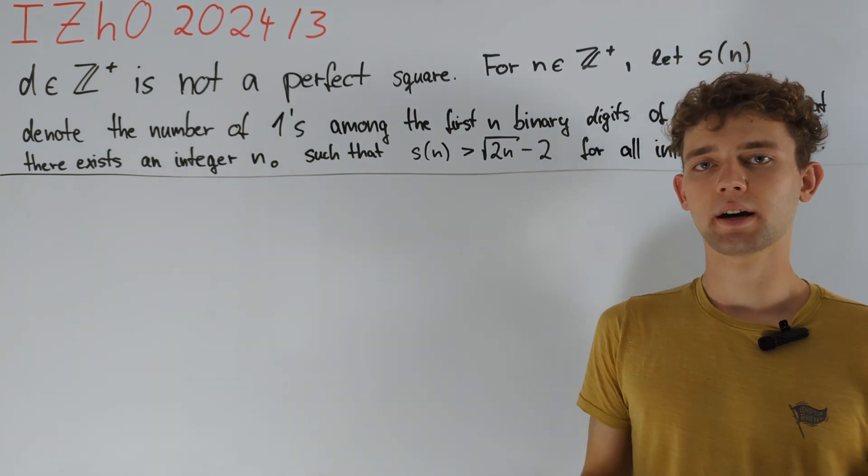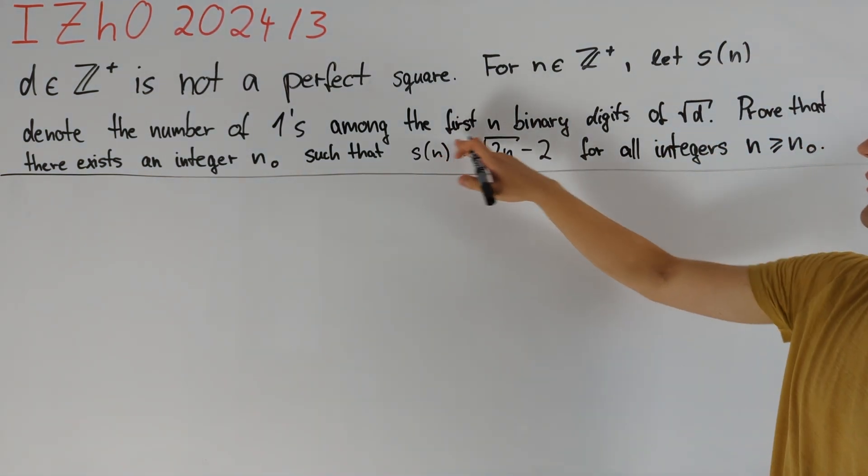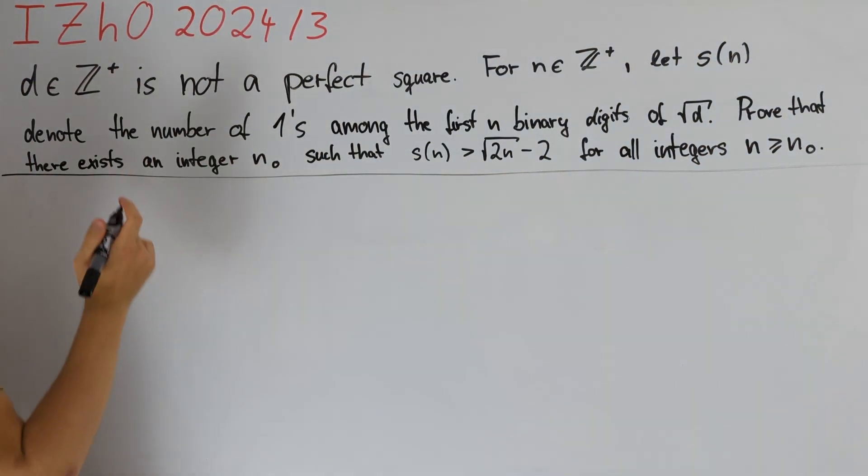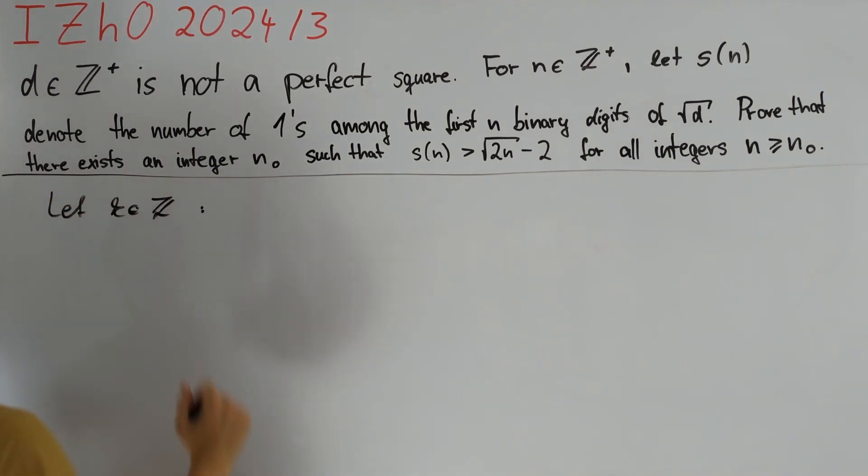So, let us start by giving this number consisting of the first n binary digits of square root of d a name. To do that we first need to define k as an integer which should be the number of digits of square root of d before the point.